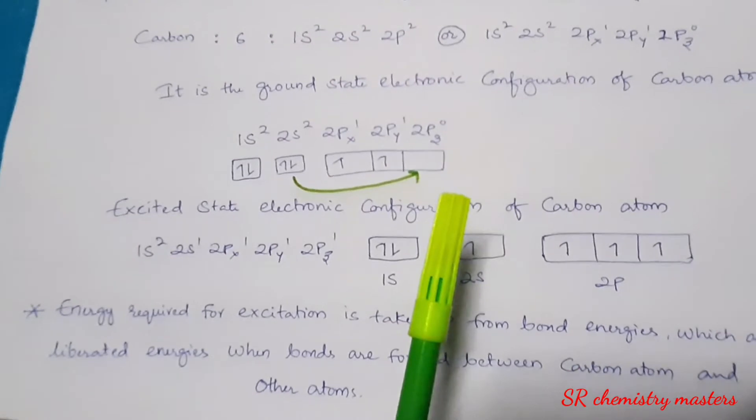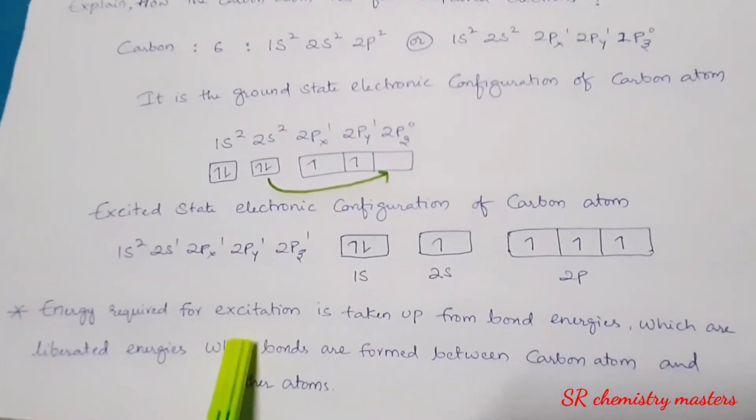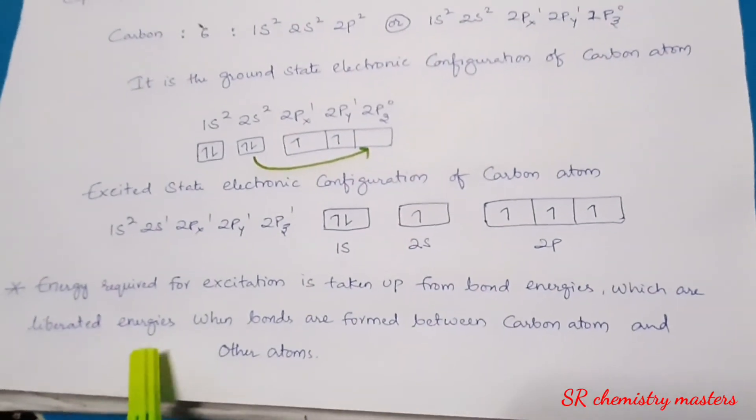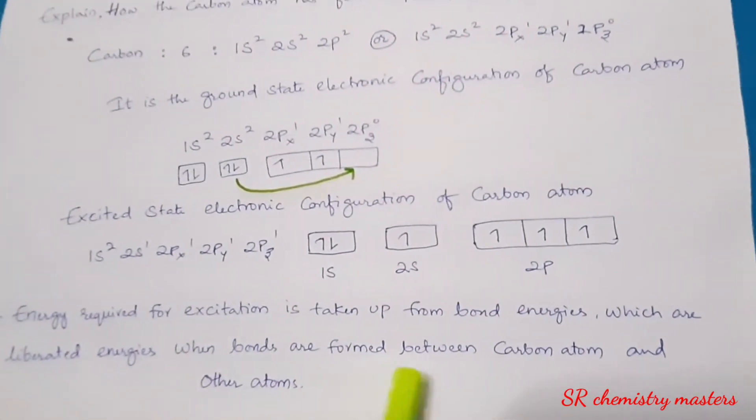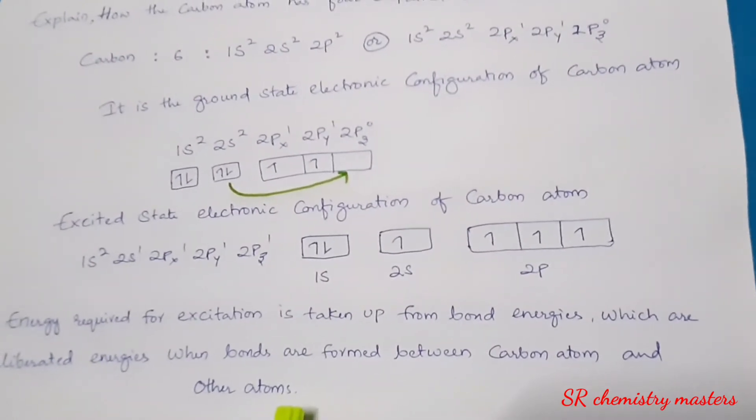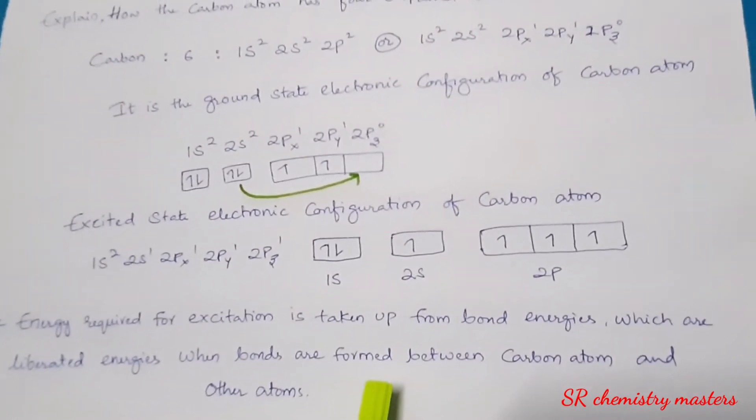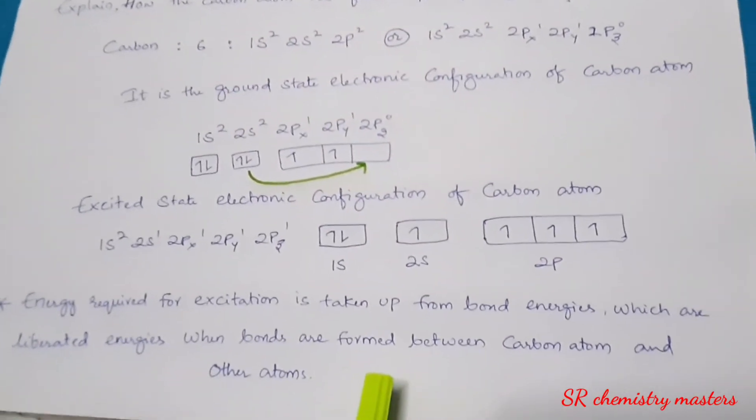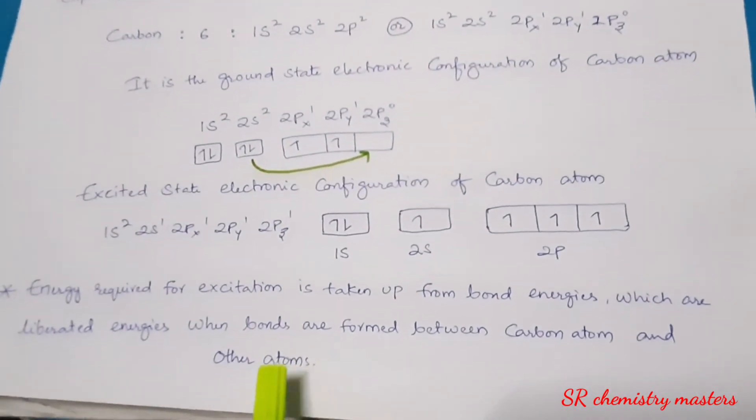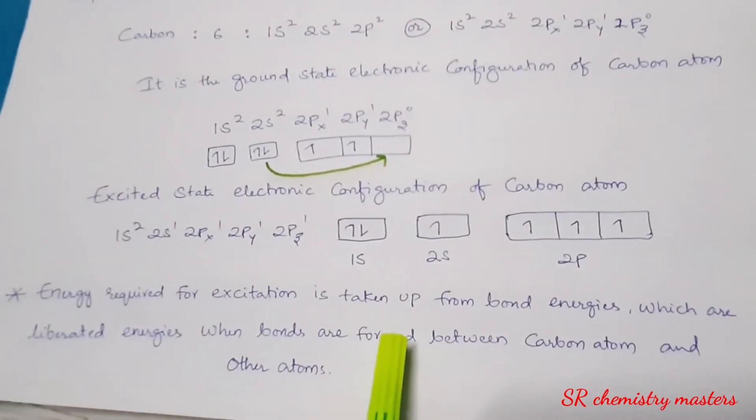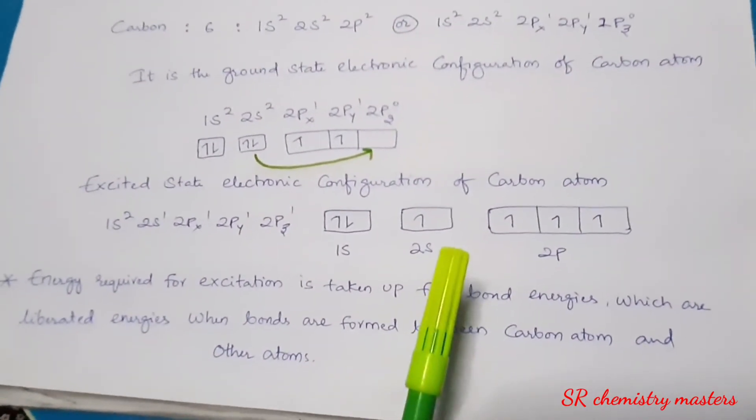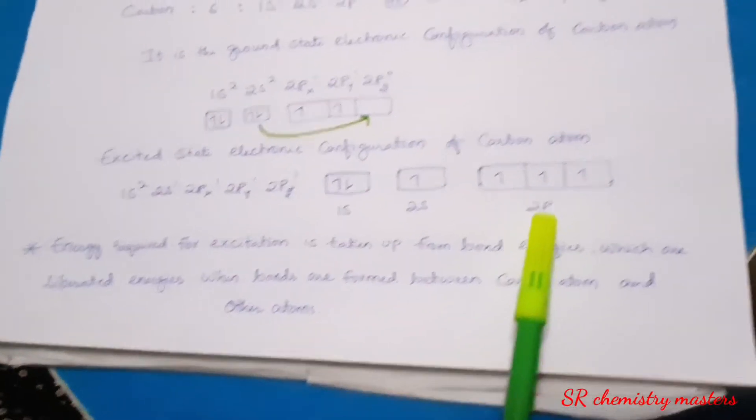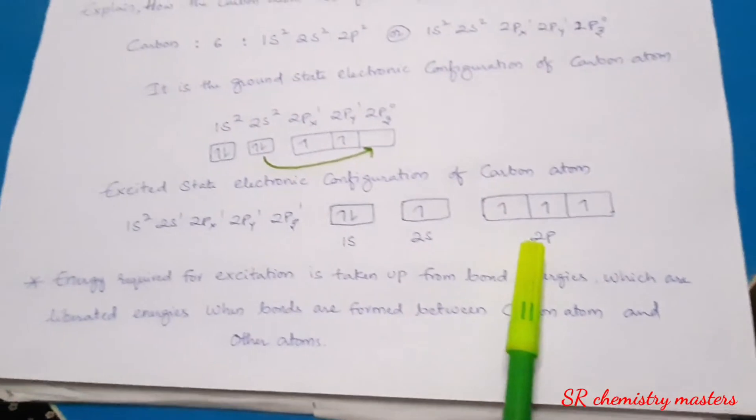So, the answer for this one is, energy required for the excitation is taken up from bond energies, which are liberated energies when the bonds are formed between the carbon atom and other atoms. Whenever the carbon atom is forming bonds with other atoms, a certain amount of energy is released. That energy is used for the excitation of electrons in the carbon atom, and the electron gets excited from 2s to 2p so that we can get 4 unpaired electrons in carbon atom.